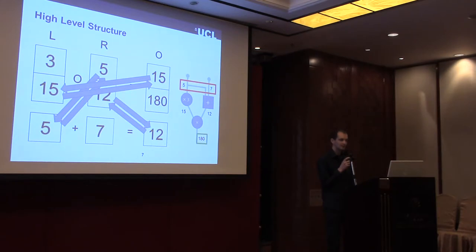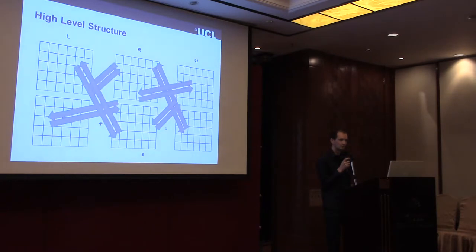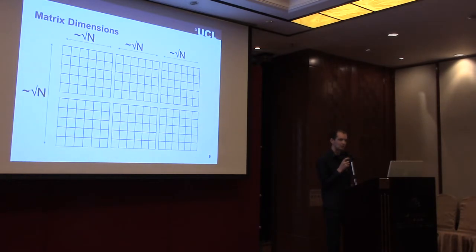That's a small example of what we would do for a small circuit. For larger circuits, we use larger matrices, and in order to get optimal communication efficiency, we choose matrices of dimensions roughly √N by √N, where N is the number of gates in the arithmetic circuit.